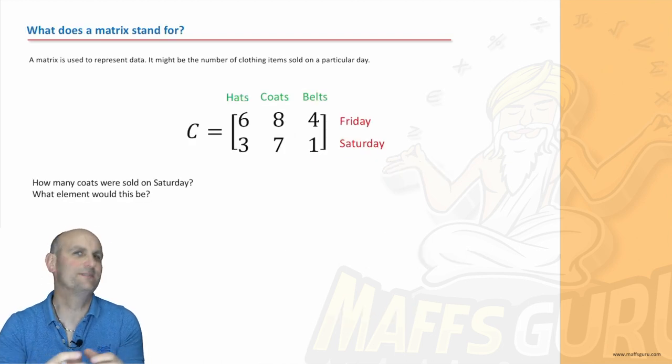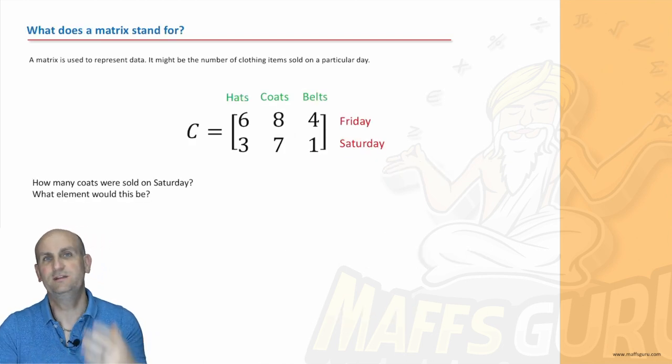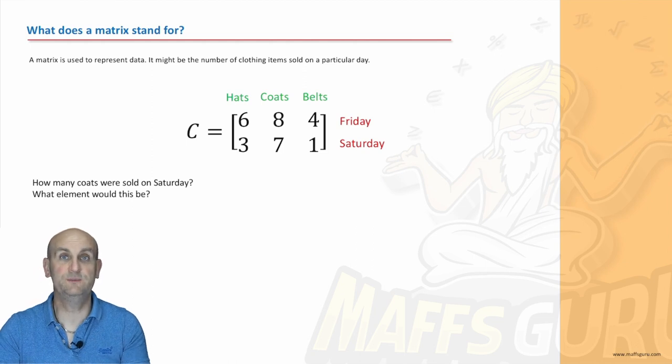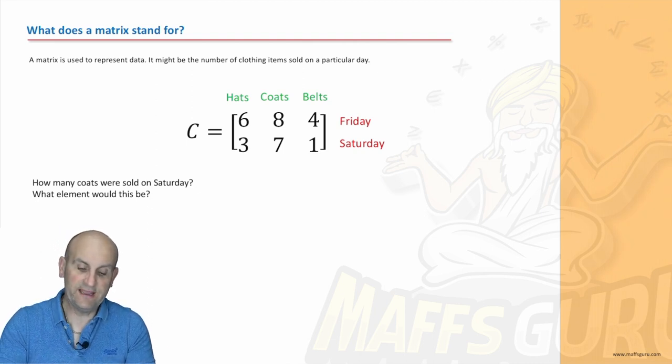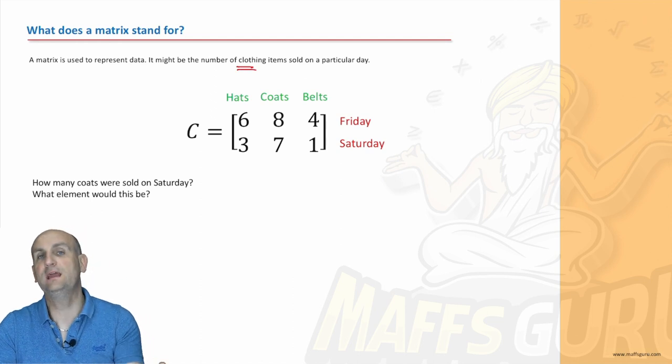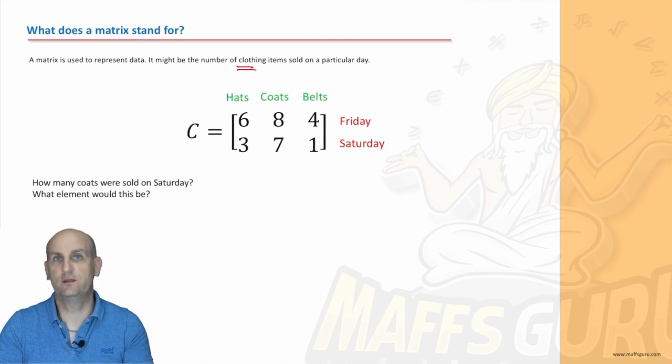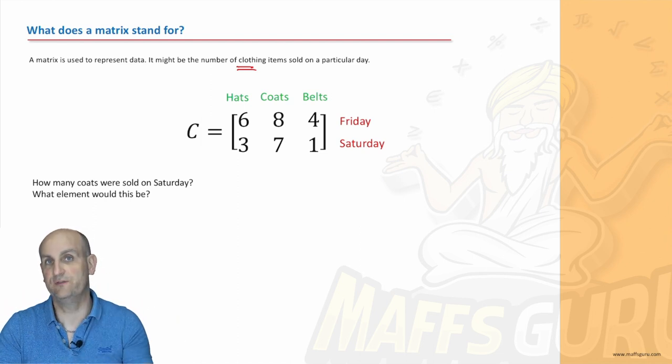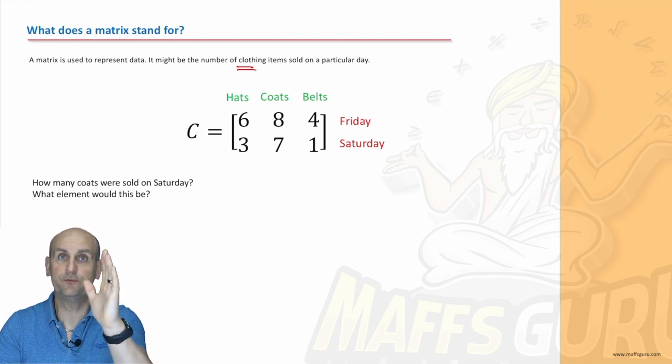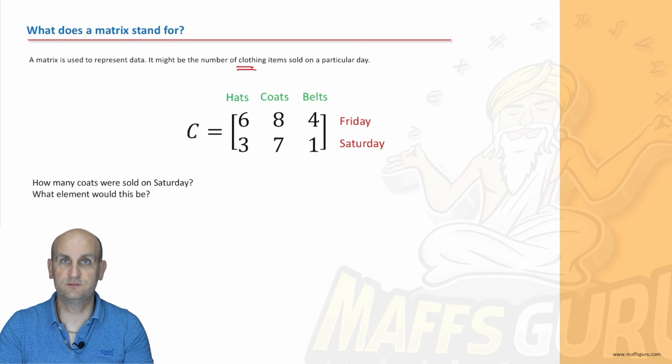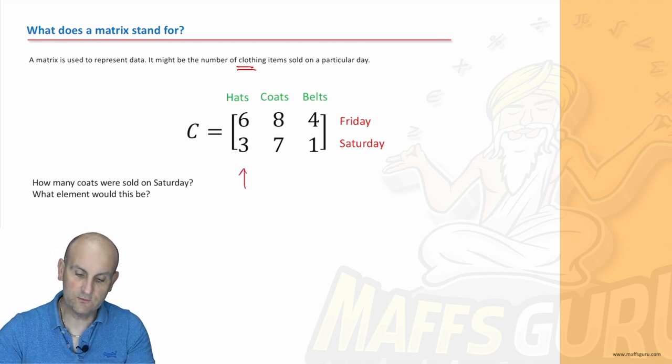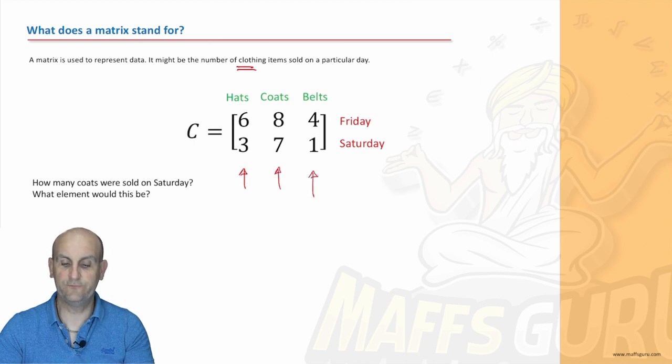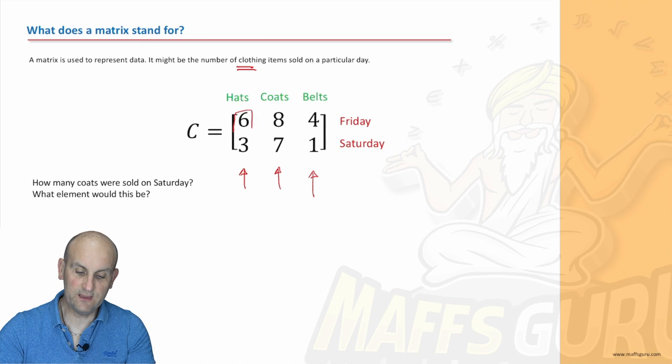Now, what does a matrix stand for? And this is pretty much the last part of this video. Matrices stand for information. Generally speaking, it will stand for something real world or it can stand for real world. So, if I owned a shop, for example, and I was looking for items of clothing that were being sold on a Friday and a Saturday, this is how I could represent my matrix. Where my rows could stand for the days and my columns could stand for the items of clothing.